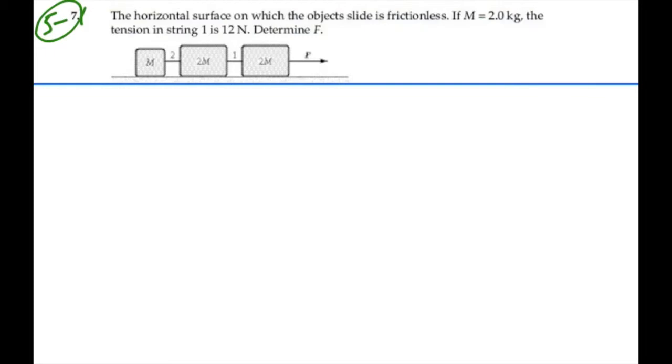So we have an m which is 2 kilograms, we have a 2m which is 4 kilograms, and we have another 2m which is 4 kilograms.